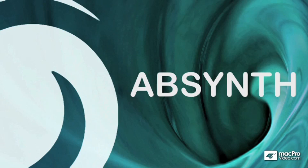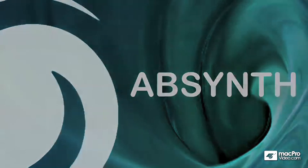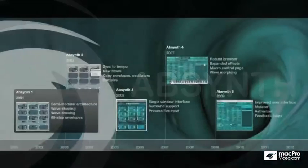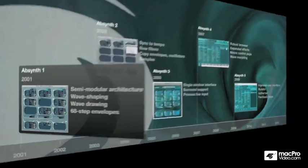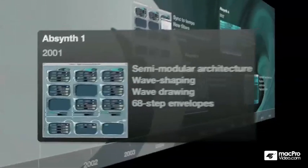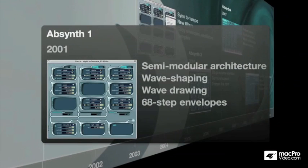Absinthe's journey began in 2001 when Native Instruments acquired the product from a company called Rizomatic. From its very beginning, Absinthe was a unique software synthesizer featuring a semi-modular architecture, incredible wave shaping capabilities, waveform drawing, and envelopes with up to 68 different steps. Absinthe produced sounds that had never been heard before.